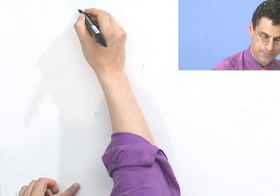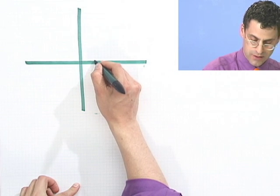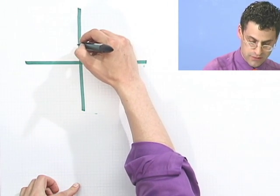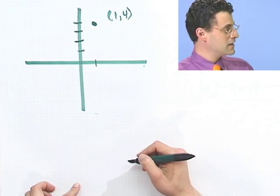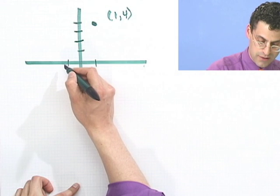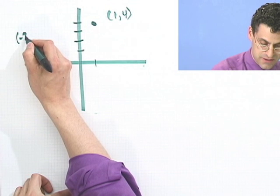This question is, let's see, find the equation of the circle having smallest radius that contains the two points (1, 4) and (-3, 2). Let me draw a picture of this first. So I have 1, 4. 1, 4. 1, 2, 3, 4. So there's 1, 4. And then I have minus 3, 2. 1, 2, 3. Minus 3, 1, 2. So there's minus 3, 2.